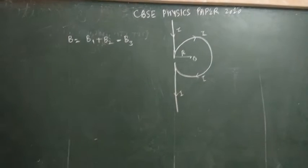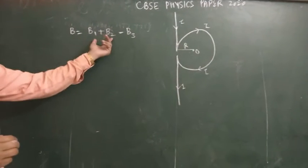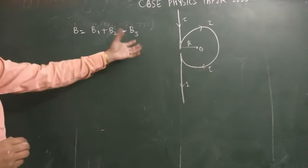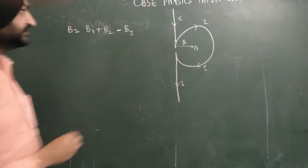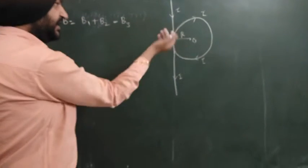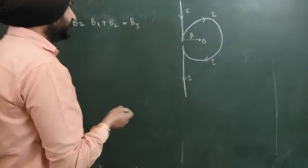We have magnetic field data: B1 plus B2 minus this one. If we have outside, we will call it positive. If we have inside, we will call it negative. This is our convention.